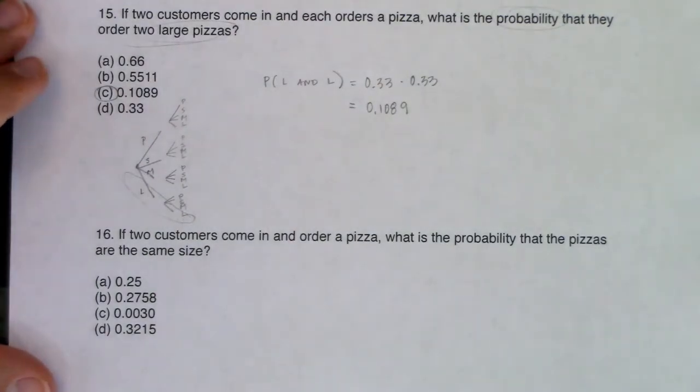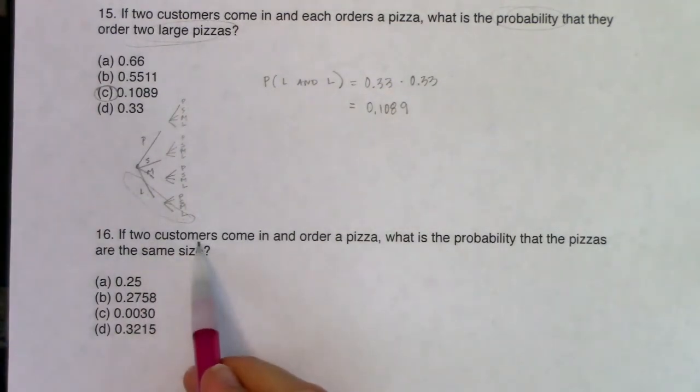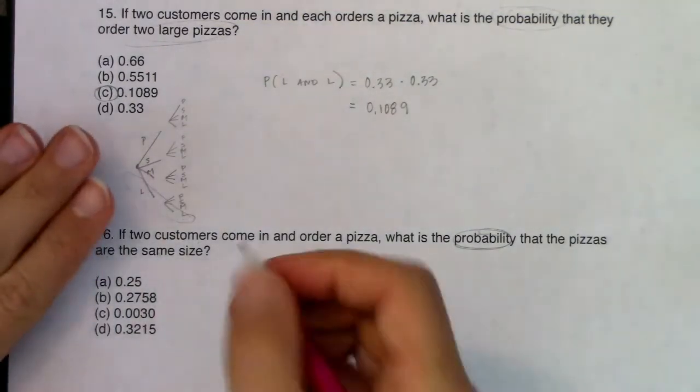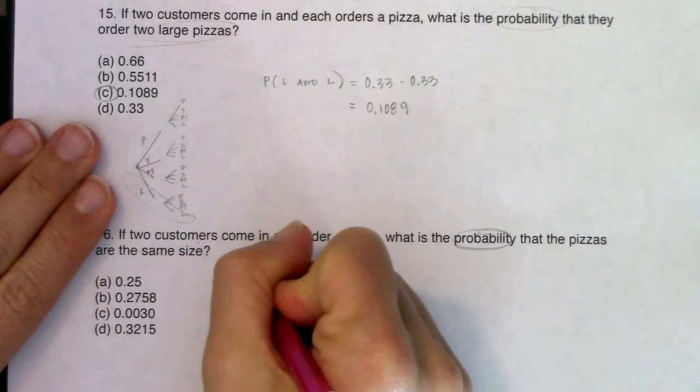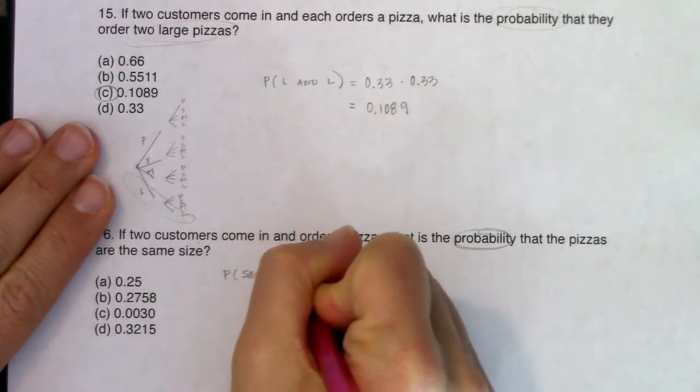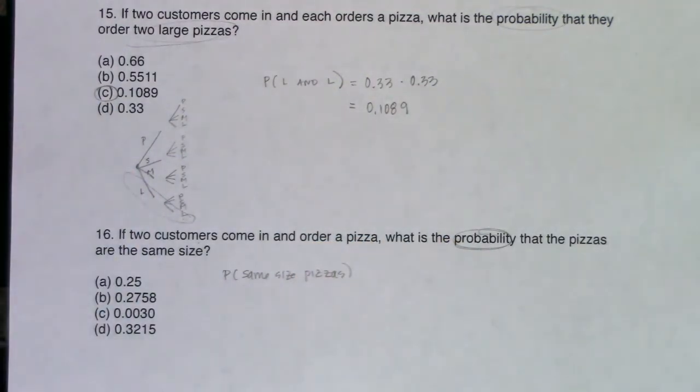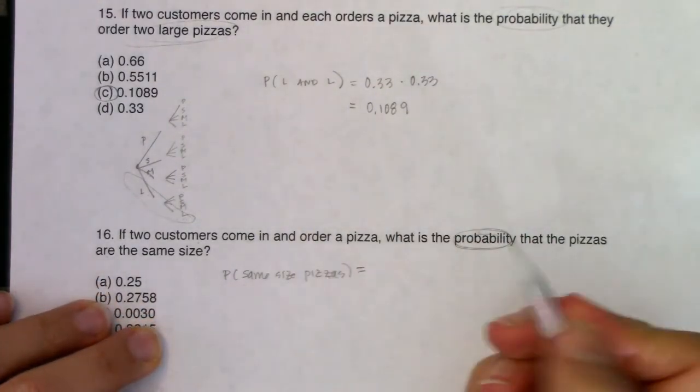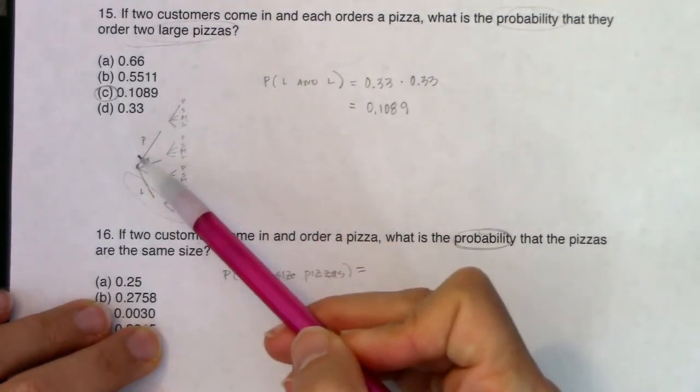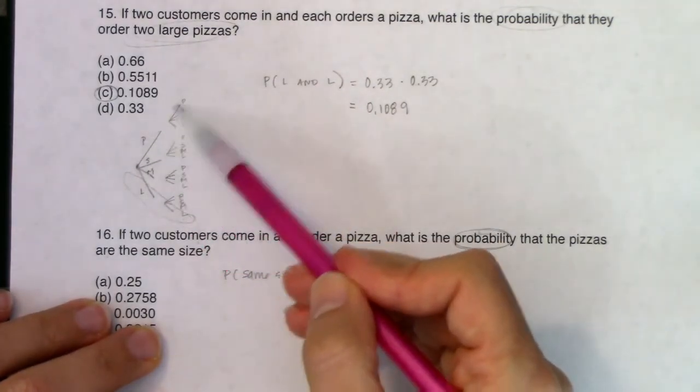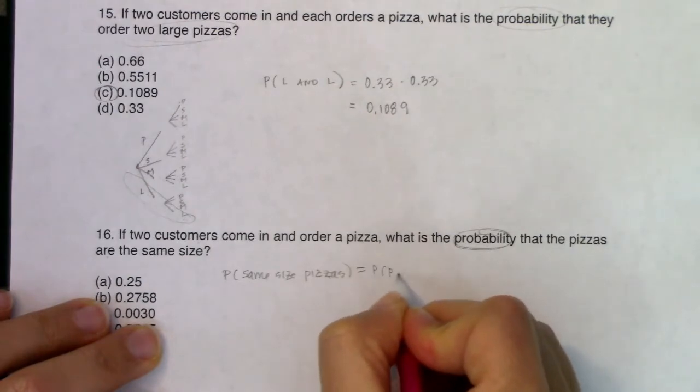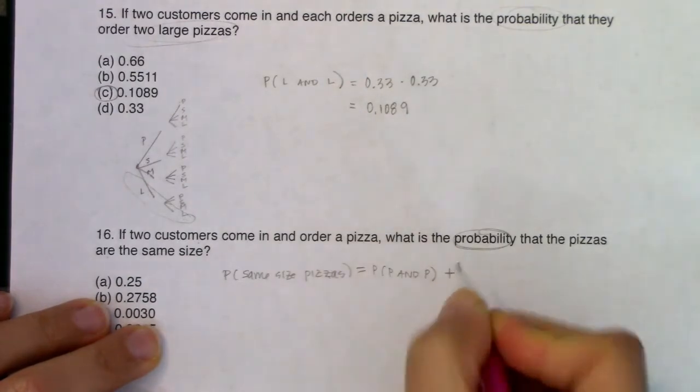Let's take a look at number 16. It says: If two customers come in and order a pizza, what is the probability that the pizzas are the same size? So now I want probability of same size pizzas. I'm still going to use this tree diagram—I don't want to redraw it. If you have the same size pizzas, let's see what branches you want. I'm going to add those disjoint branches. Personal-personal means they have the same size, so I want the probability of P and P. The next one is S and S.